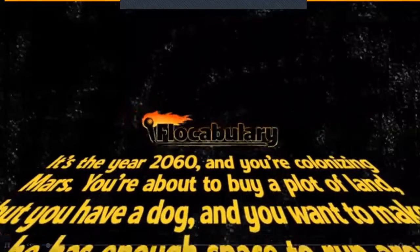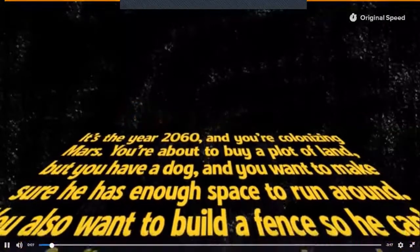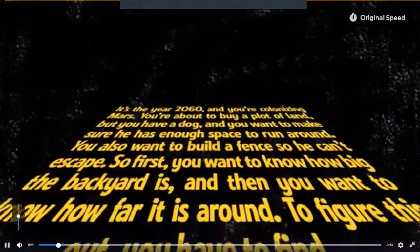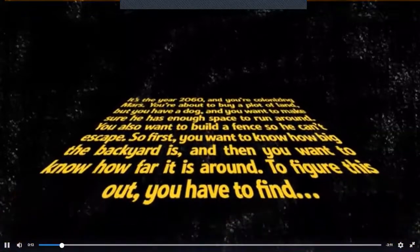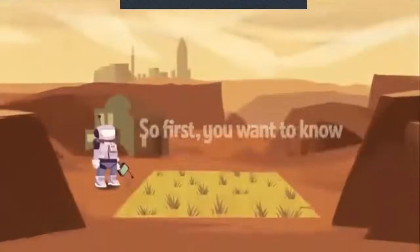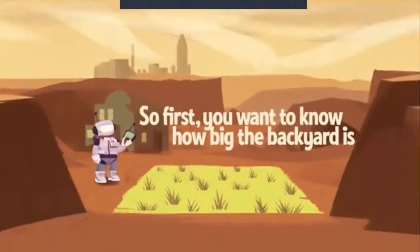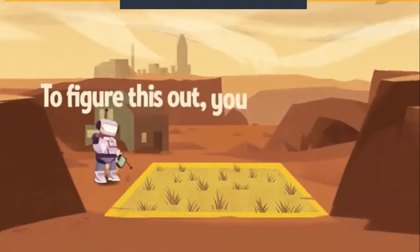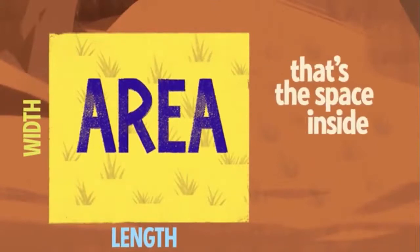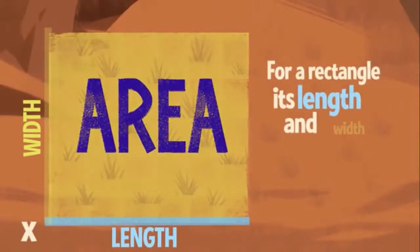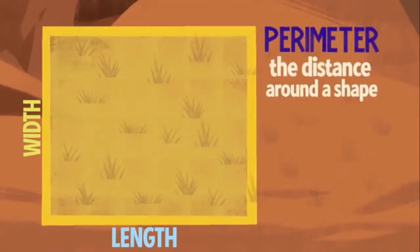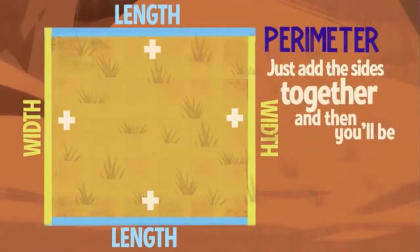It's the year 2060 and they're colonizing Mars. You're about to buy a lot of land but you have a dog and you want to make sure he has enough space to run around. You also want to build a fence so he can't escape. So first you want to know how big the backyard is, and then you want to know how far it is around. To figure this out you have to find the area — that's the space inside; for a rectangle it's length and width multiplied. Perimeter — the distance around a shape — just add the sides together and then you'll be great.